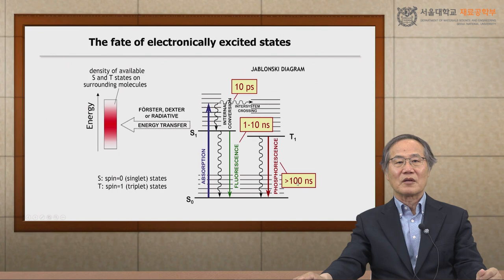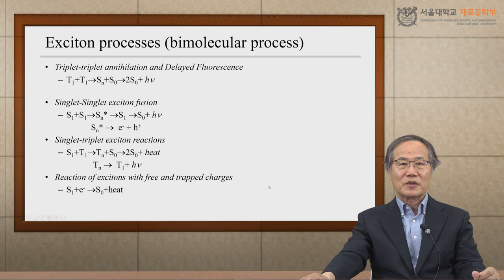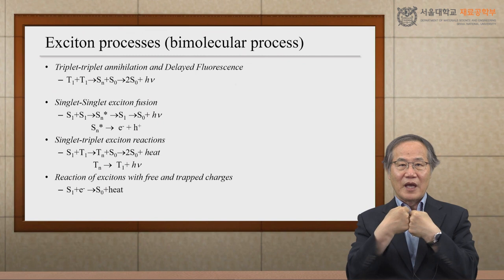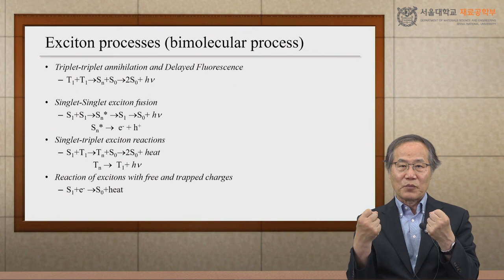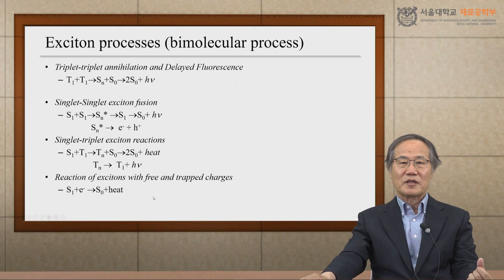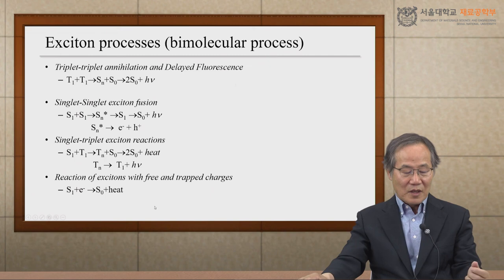There are also two particular bimolecular processes: triplet-triplet annihilation, which gives delayed fluorescence, and singlet-singlet exciton fusion, singlet-triplet exciton reaction, or singlet-polaron interactions. This is the end of the optical properties section. The lecture will continue for the second part discussing electrical properties. Thank you for your attention.